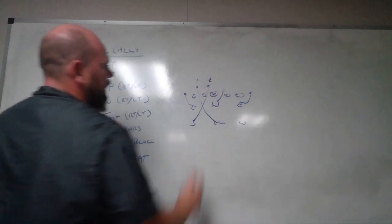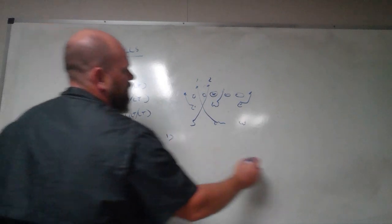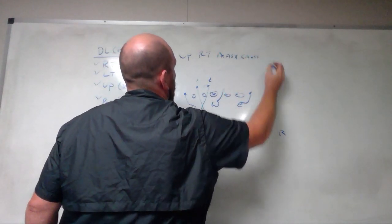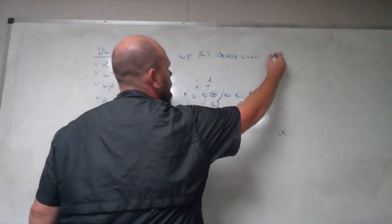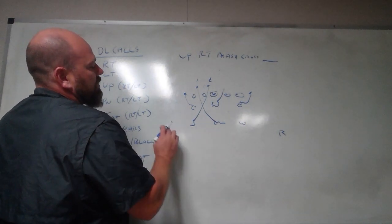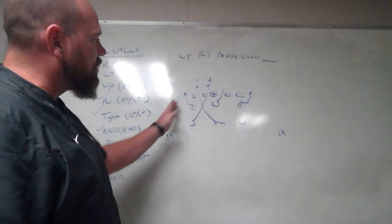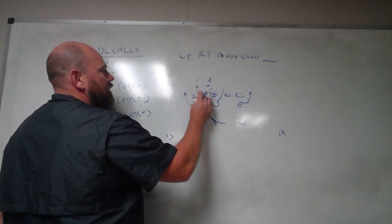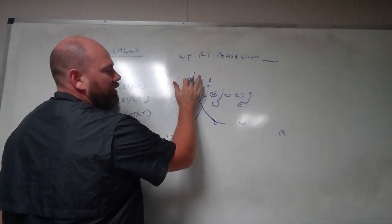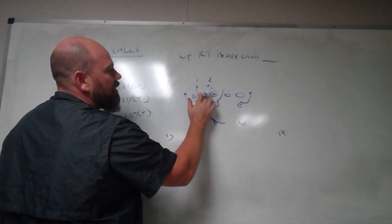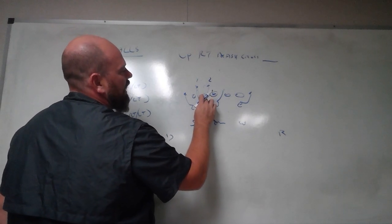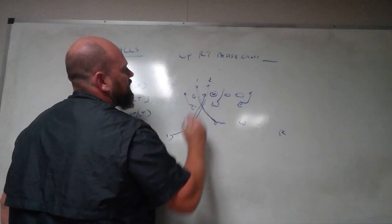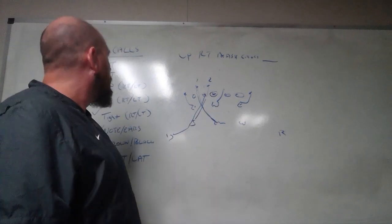On Up Right Mash Cross with Dog coverage (Dragon), we're looking for layers on the blitz. The Mike linebacker blitzes first, turning the guard's shoulders in pass protection. Sam comes underneath attacking the V of the neck of the center. The Dog, since it's an Up call, comes underneath the defensive end on a different layer. Will takes the next open adjacent gap. We should get to the quarterback quickly with that combination.